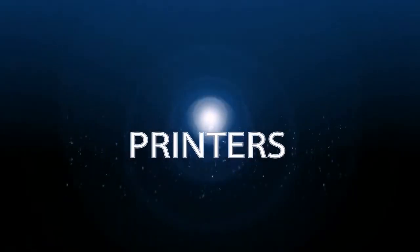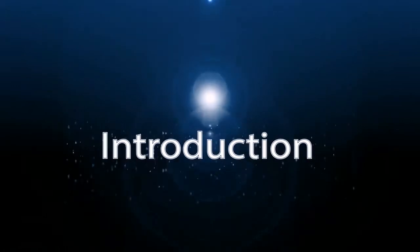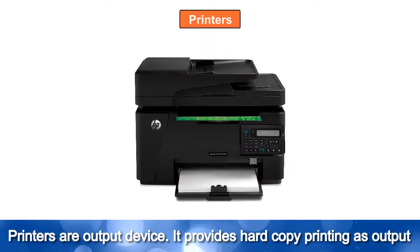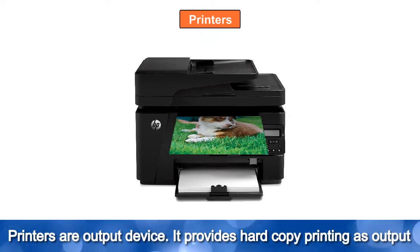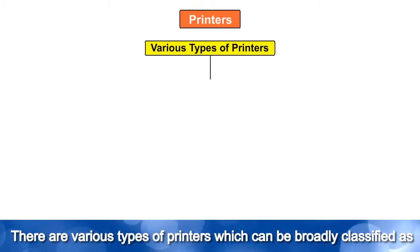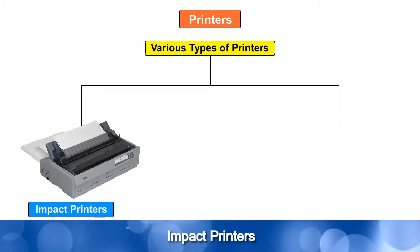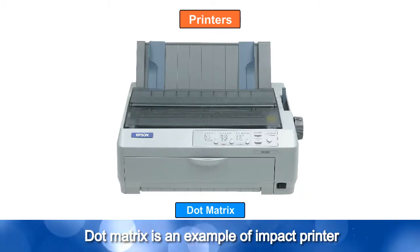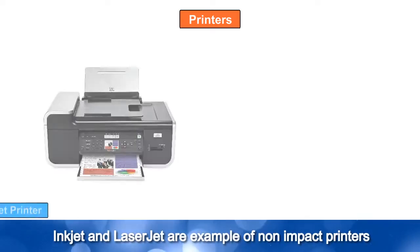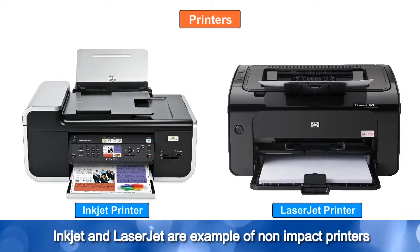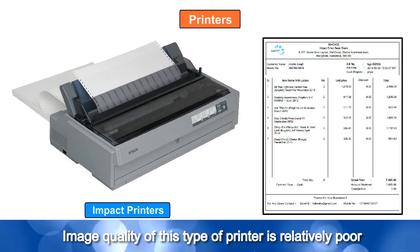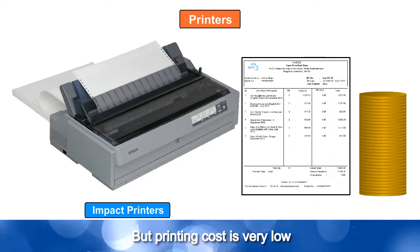Printers are output devices that provide hard copy printing as output. There are various types of printers which can be broadly classified as impact printers and non-impact printers. Dot matrix is an example of an impact printer. Impact printers like dot matrix are mostly used for billing purposes. The image quality of this type of printer is relatively poor, but printing cost is very low.